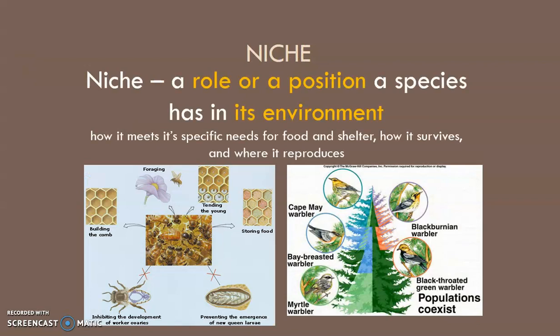A niche is your role or position within your environment. My role — I'm a teacher, a mother, a wife. So what is your role or position as a species? Bees have their specific role, so they have a niche. It describes how an organism meets its specific needs for food and shelter, how it survives, and where it reproduces.